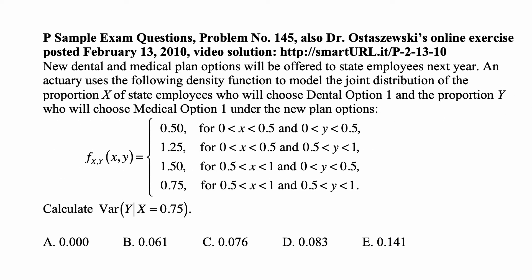Here's a problem for today for exam P on probability. New dental and medical plan options will be offered to state employees next year. An actuary uses the following density function to model the joint distribution of the proportion X of state employees who will choose dental option 1 and the proportion Y who will choose medical option 1 under the new plan options.